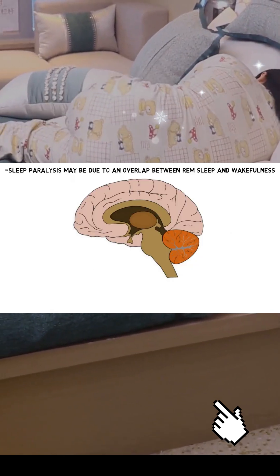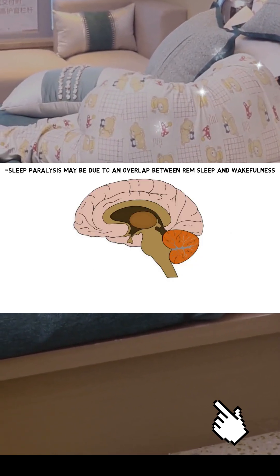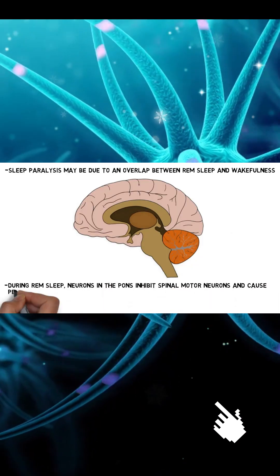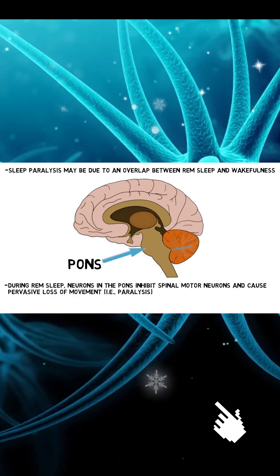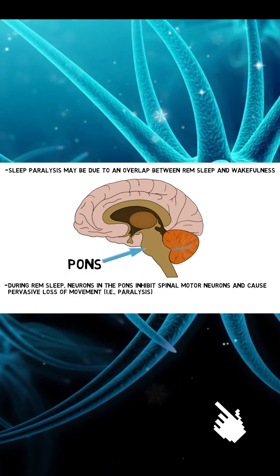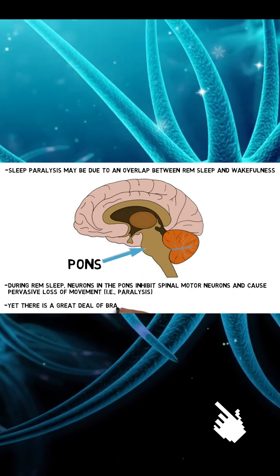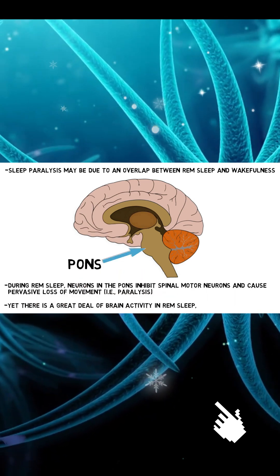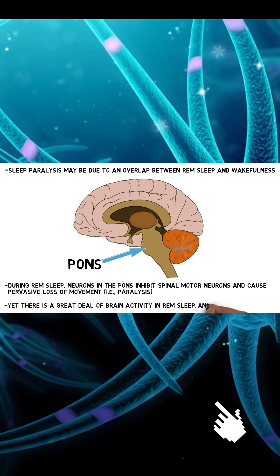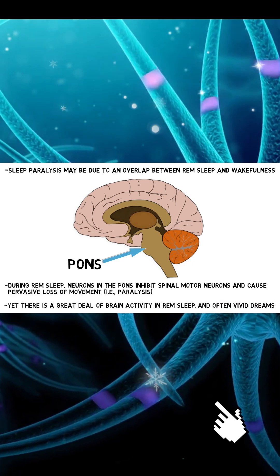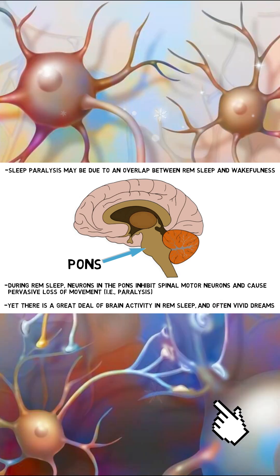During REM sleep, neurons in the pons act to inhibit motor neurons in the spinal cord, causing a pervasive loss of muscle movement. And yet, there is a great deal of brain activity occurring in REM sleep, and it is the stage of sleep when we typically experience our most vivid dreams.